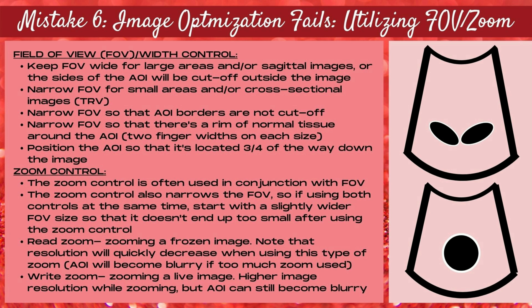Continuing along with mistake number six, image optimization fails when imaging the aorta — now let's talk about how to properly utilize the field of view size and zoom controls, as these are often used together. The field of view should be kept wide when imaging large areas or sagittal images so the sides aren't cut off. Narrow the field of view for small areas or transverse cross-sectional images, ensuring the area of interest borders are not cut off and there's at least two finger widths of normal tissue on each side.